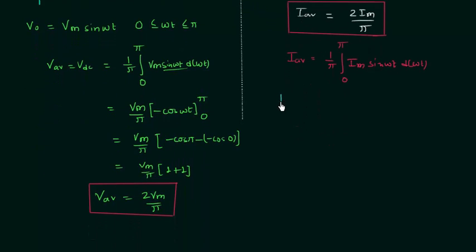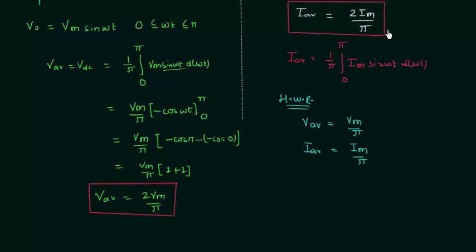In the case of a half wave rectifier, the average voltage was equal to Vm/π and average current was equal to Im/π. But in the full wave rectifier, the average current is 2Im/π and the average voltage is 2Vm/π. So the average current and average voltage in a full wave rectifier are twice the corresponding values in a half wave rectifier.